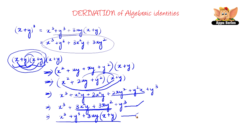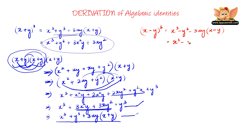Now let us go to another one which is x minus y the whole cube, which can be written as x cube minus y cube minus 3xy into x minus y. Or equivalently, x cube minus 3x square y plus 3xy square minus y cube.